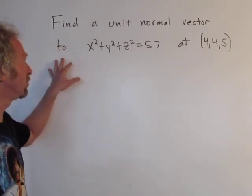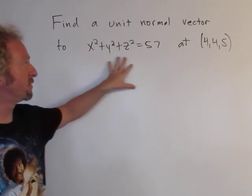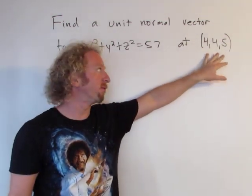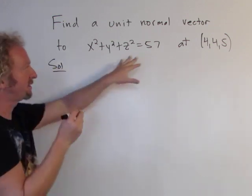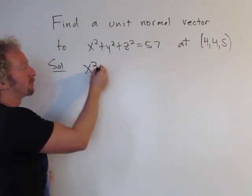In this video we have to find a unit normal vector to the sphere at the point (4,4,5). We'll start by subtracting the 57 from both sides so we end up with x squared plus y squared plus z squared minus 57 and that's equal to zero.